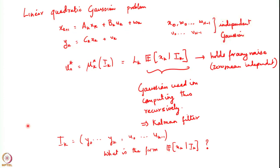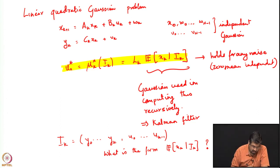To recap: the optimal control is linear in the conditional expectation of the state given the information — this holds without any Gaussian assumption on the noise. If we further want to claim that this is linear in I_k, then we need the Gaussian assumption. With the Gaussian assumption, E[x_k | I_k] is linear in I_k, and therefore u_k is also linear in I_k. Without the Gaussian assumption, u_k is linear in the conditional expectation but not necessarily linear in I_k directly.